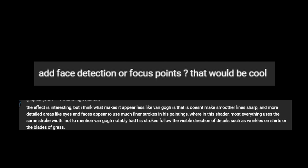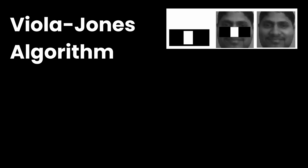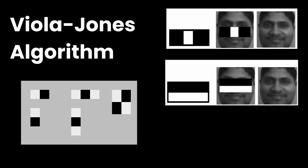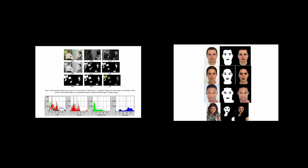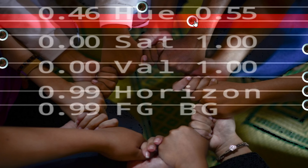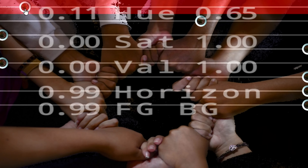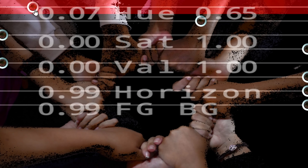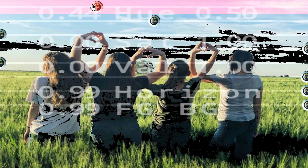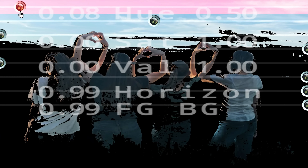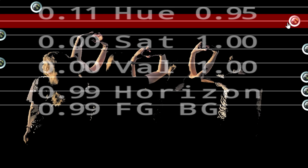Two commenters on my Van Gogh shader suggested finding a way to detect faces to paint them with more detail. The non-AI method of face detection I found is too slow for real time in a shader, but we can detect skin. I found two papers using HSV — the one I understood best simply adjusts the threshold to find skin colors. Humans have a wide variety of skin tones so we need to tweak this, and anything else in the scene close enough in color will also be detected as skin, but those are small prices to pay for free skin detection.